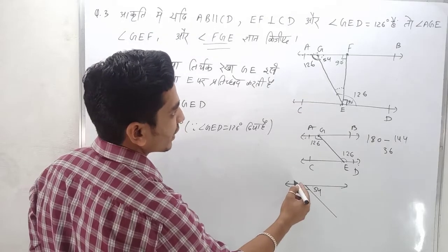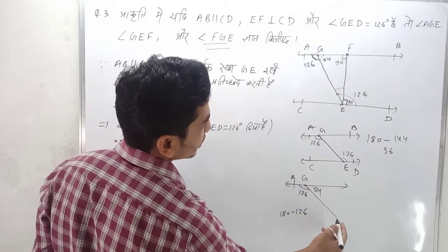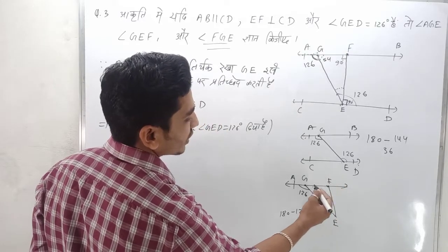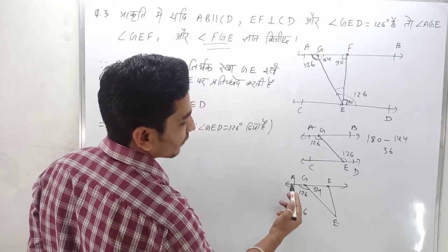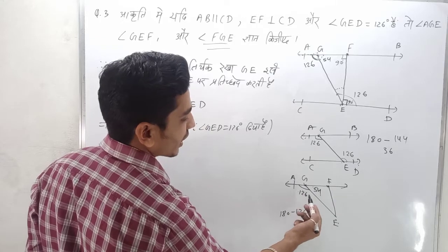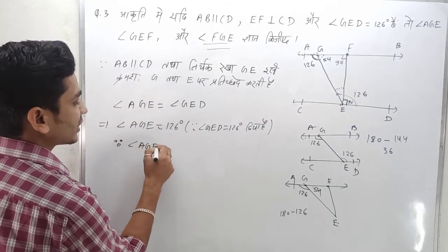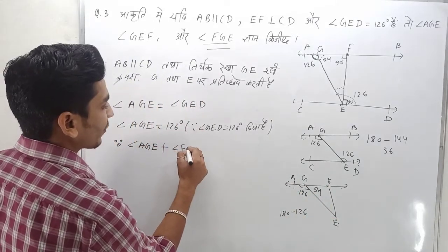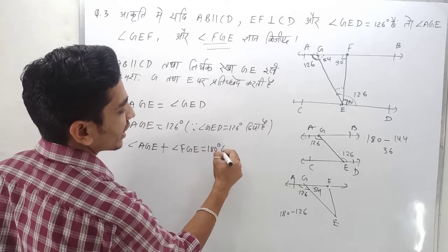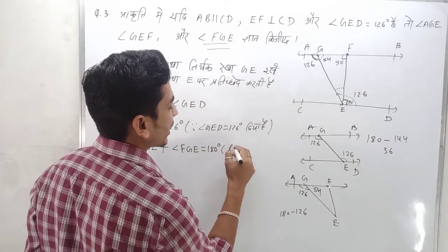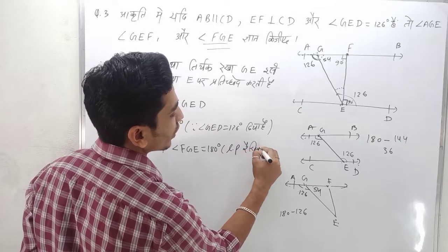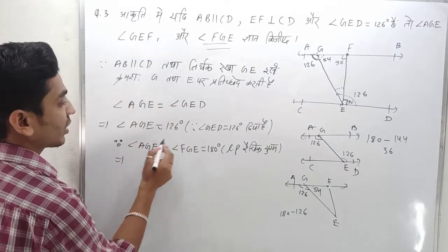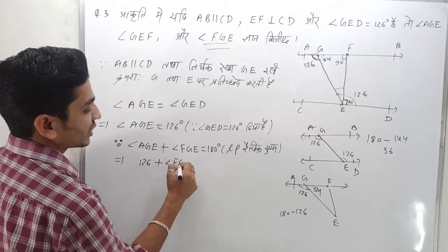Point F joins this at G, creating FGE and AGE. Angle AGE plus FGE equals 180 degrees. You can call this linear pair, or rekhik yugma.